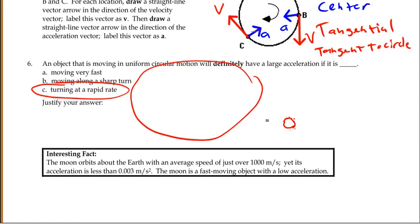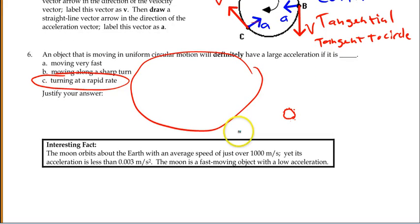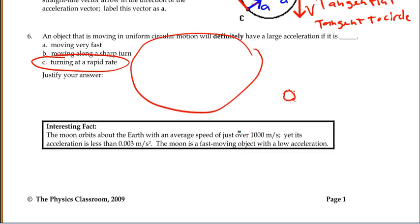Moving very fast around a circle might give us a large acceleration. Moving on a sharp turn might give us a large acceleration, but only if other factors are in our favor. A little interesting fact there at the bottom. The example of where moving very fast does not really give you a large acceleration, the moon is moving at just over 1,000 meters per second. That's pretty quick, yet its acceleration is 0.003 meters per second squared. So, even though it has a very high speed, it has a low acceleration because the radius of its circle is about 250,000 miles. So, very, very low acceleration.